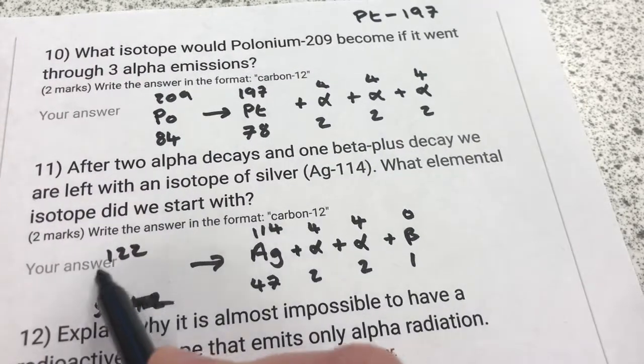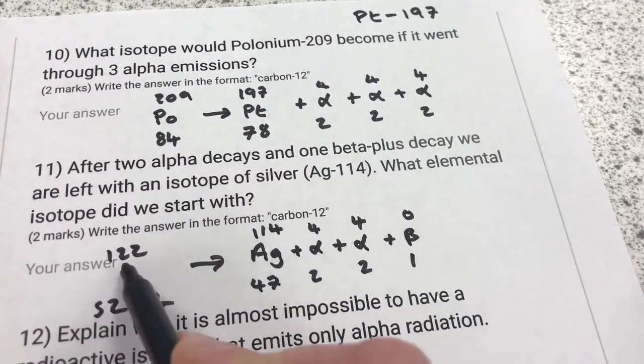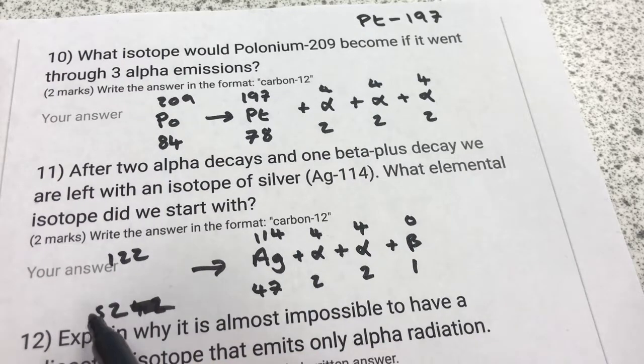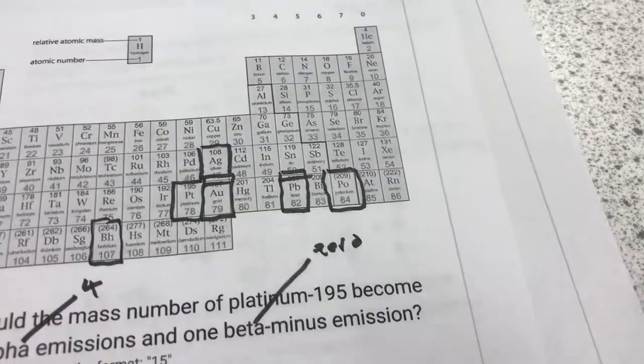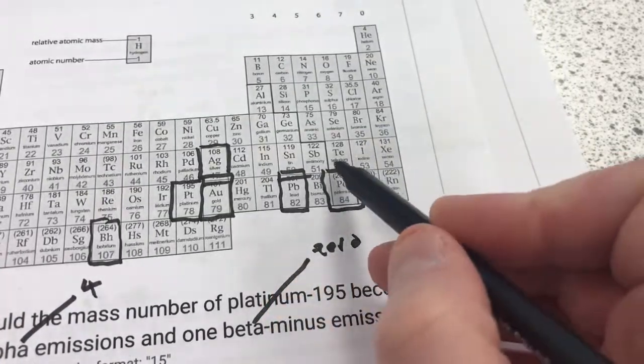Okay, so the next thing I need to do is look up what element has an atomic number of 52. So back to the periodic table, 52 would be this one.